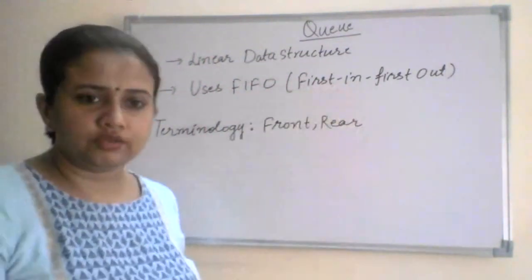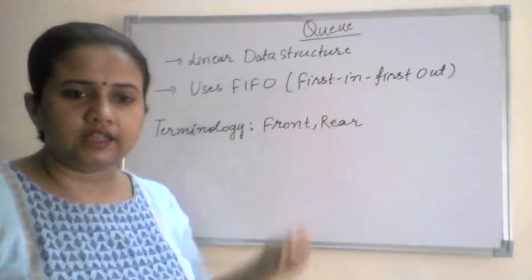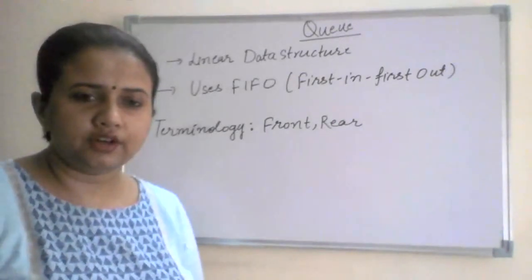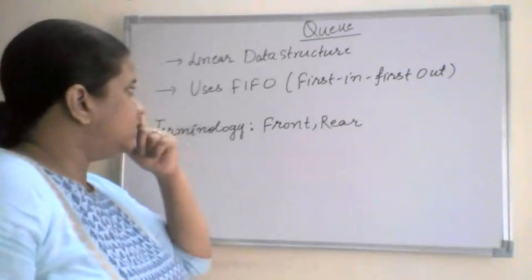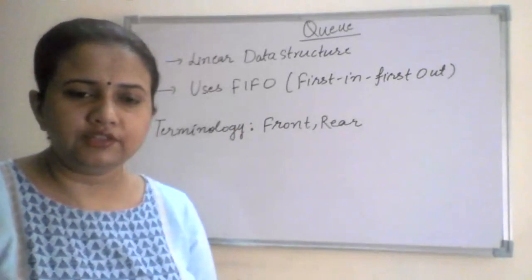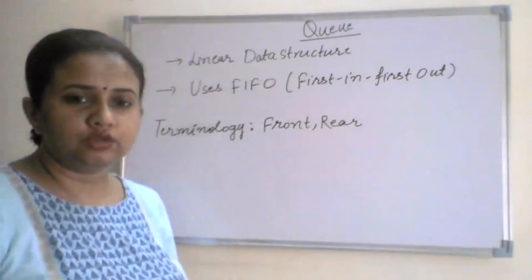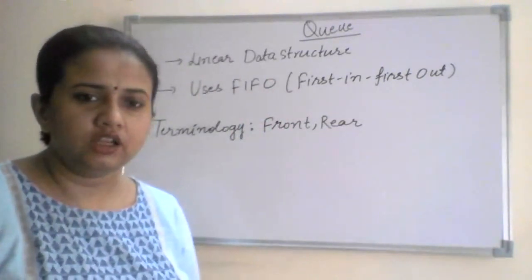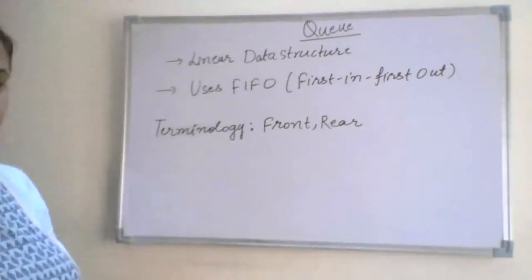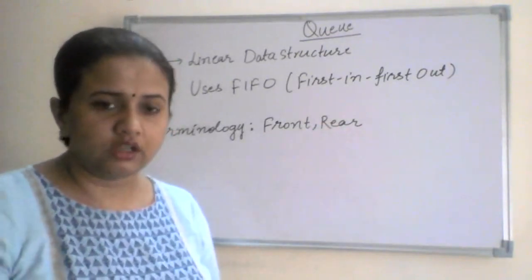The element which has been in the queue for the longest time will be removed first. This is how queues are different from stacks — stacks use the operation LIFO (Last In First Out), whereas queues use FIFO, which is First In First Out. There are different terminologies used for queues: front and rear, among others which we'll discuss shortly.